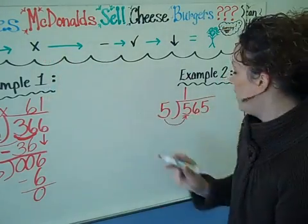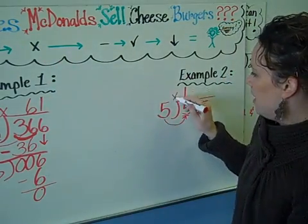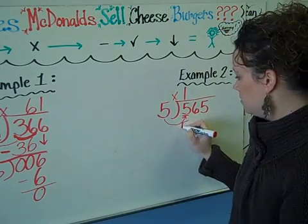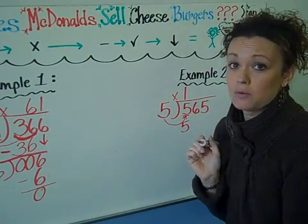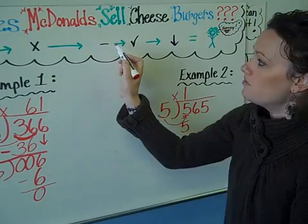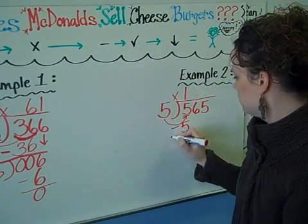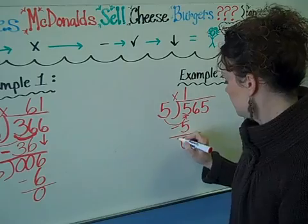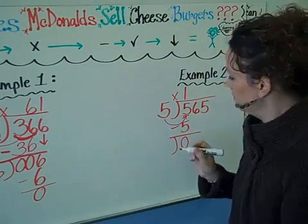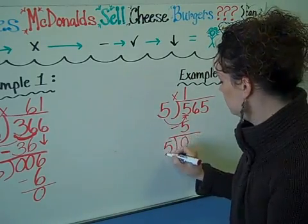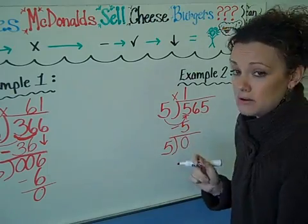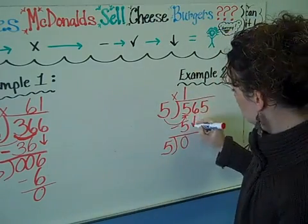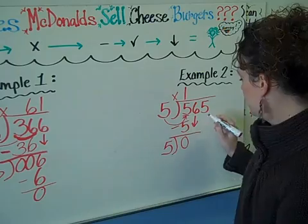Our next step is multiply. We take our one and we times it by five. One times five equals five. And we put it directly below the number we were dealing with. Now we move on to subtraction. Five minus five is zero. Create a new house. Bring down your divisor. And now we check to see. Does five go into zero? The answer would be no. So then you need to bring down the next number. Six.